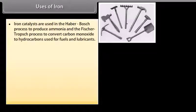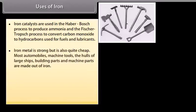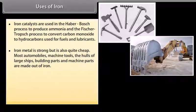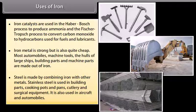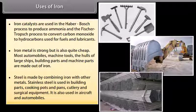Uses of iron. Iron catalysts are used in the Haber-Bosch process to produce ammonia and the Fischer-Tropsch process to convert carbon monoxide to hydrocarbons used for fuels and lubricants. Iron metal is strong but is also quite cheap. Most automobiles, machine tools, the hulls of large ships, building parts and machine parts are made out of iron. Steel is made by combining iron with other metals. Stainless steel is used in building parts, cooking pots and pans, cutlery and surgical equipment. It is also used in aircrafts and automobiles.